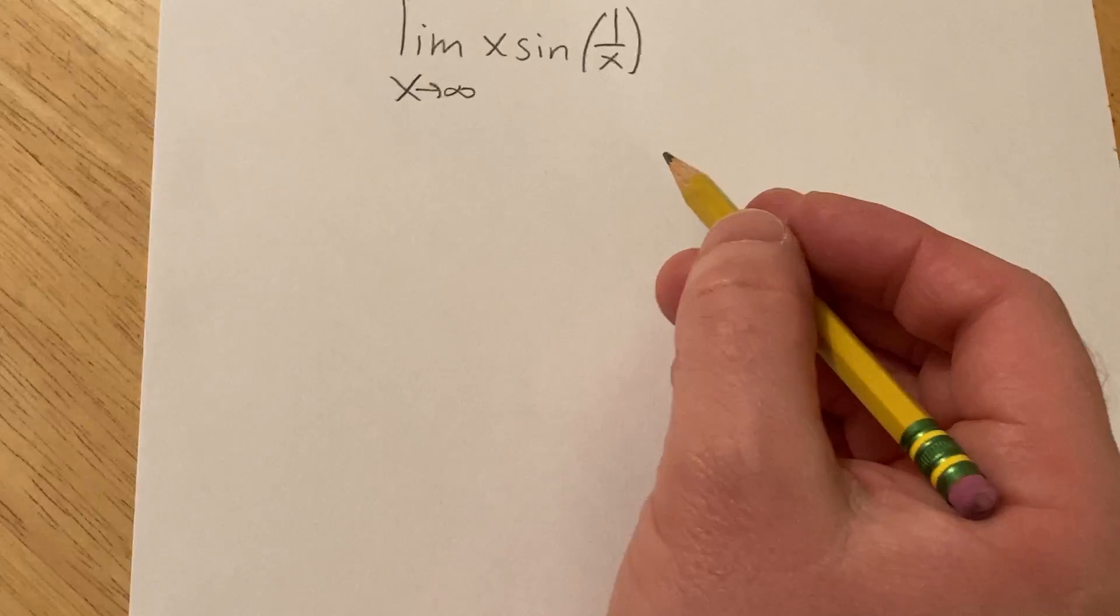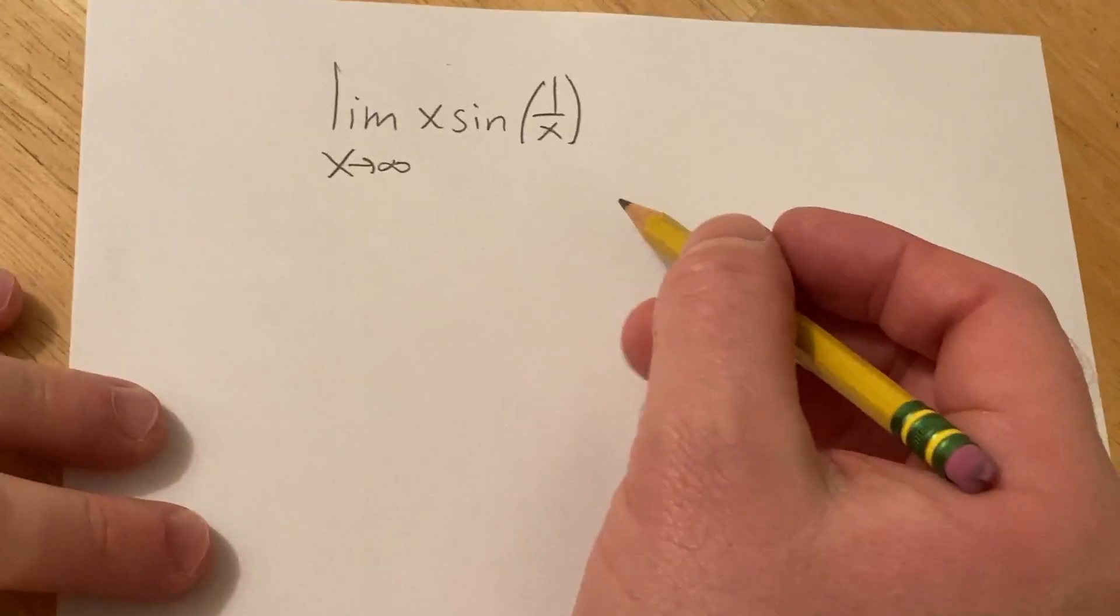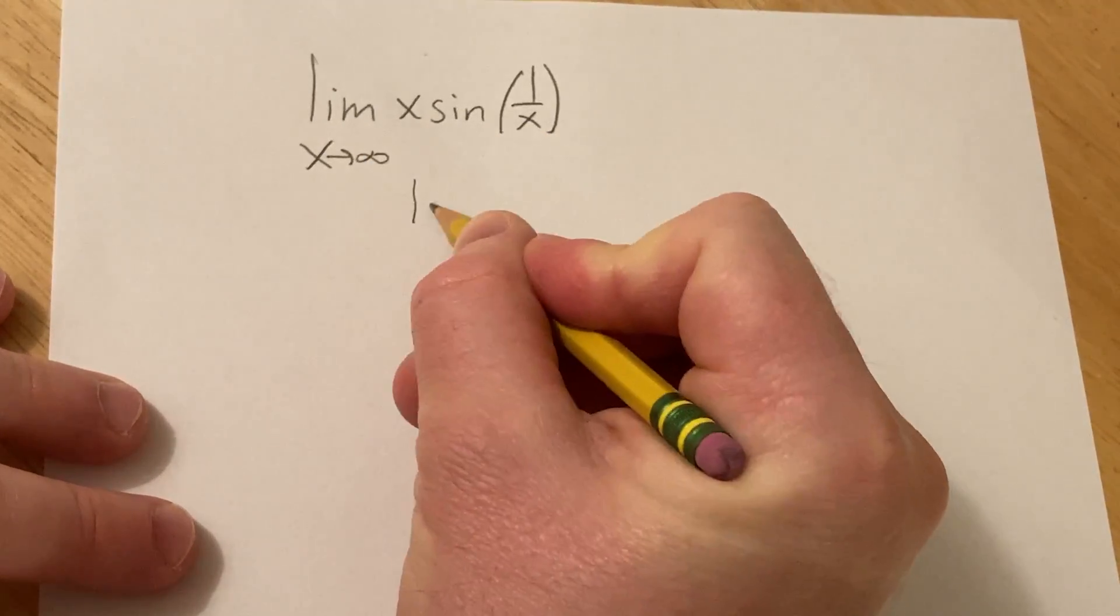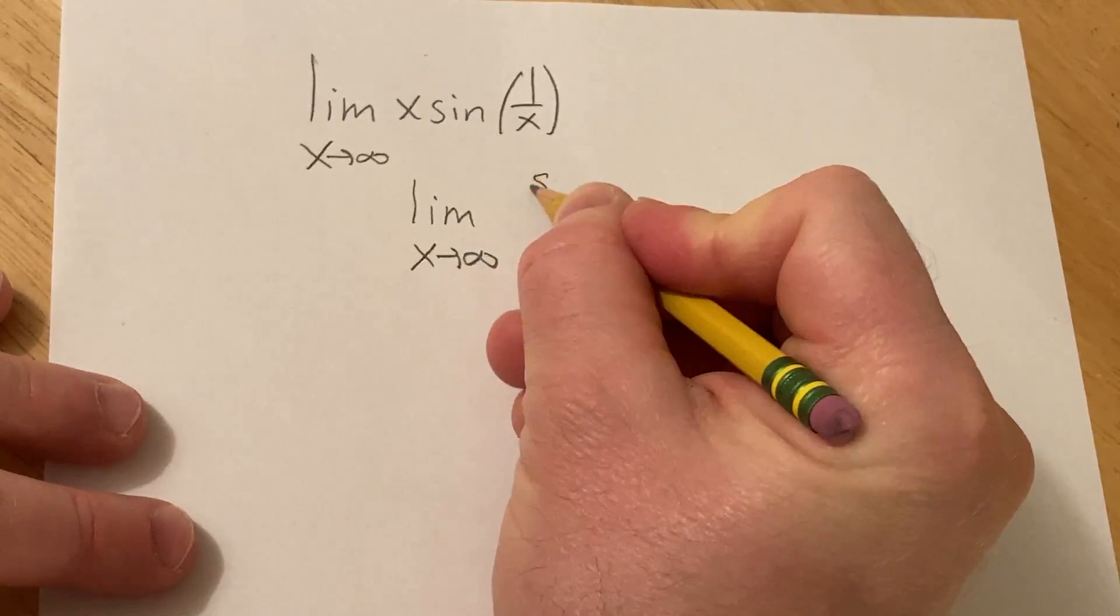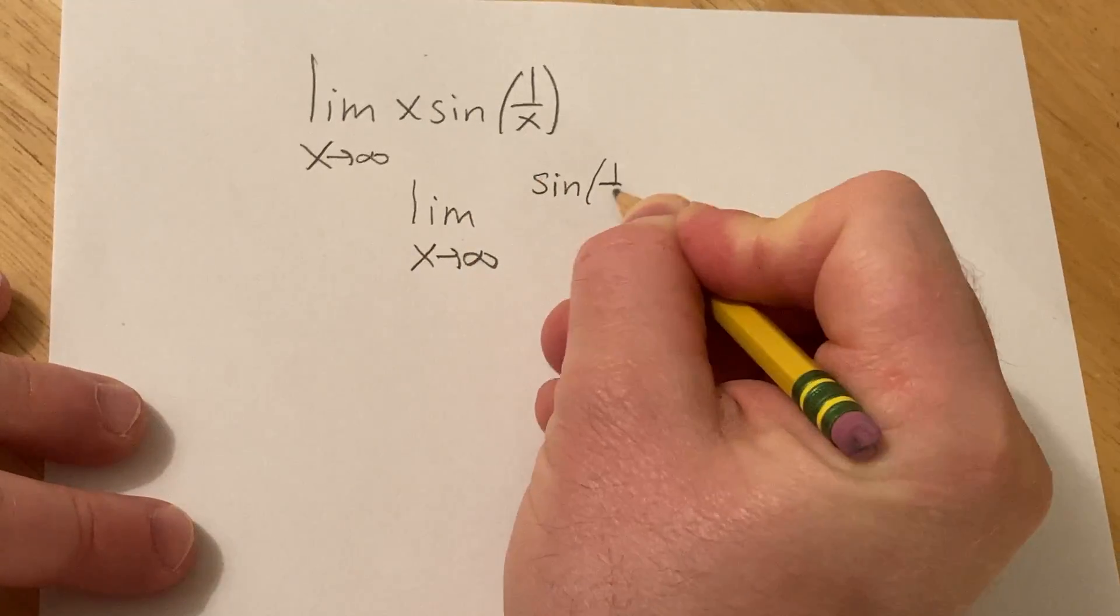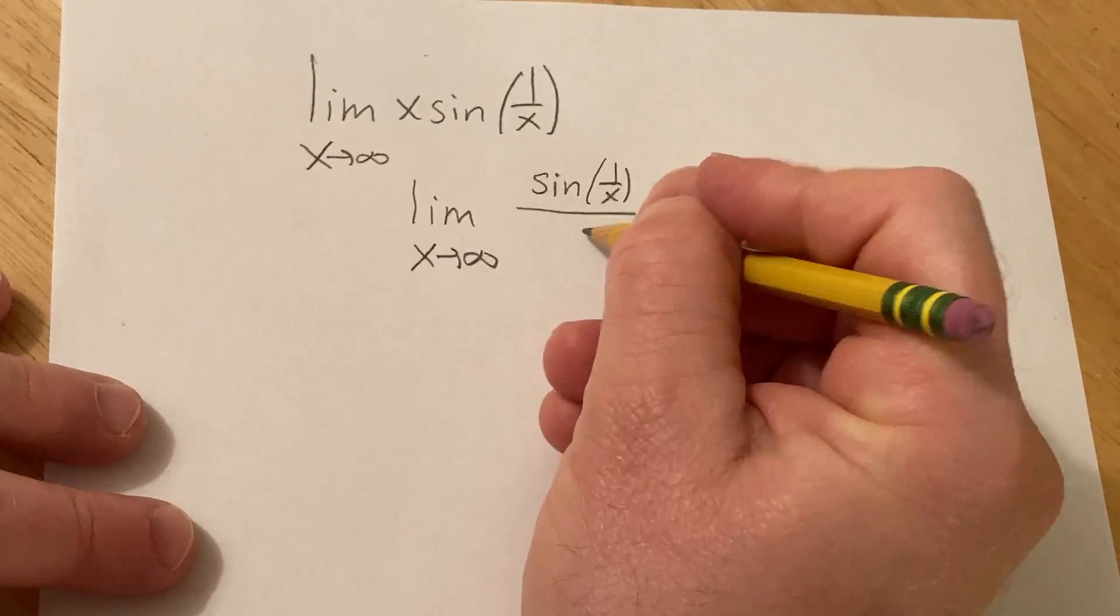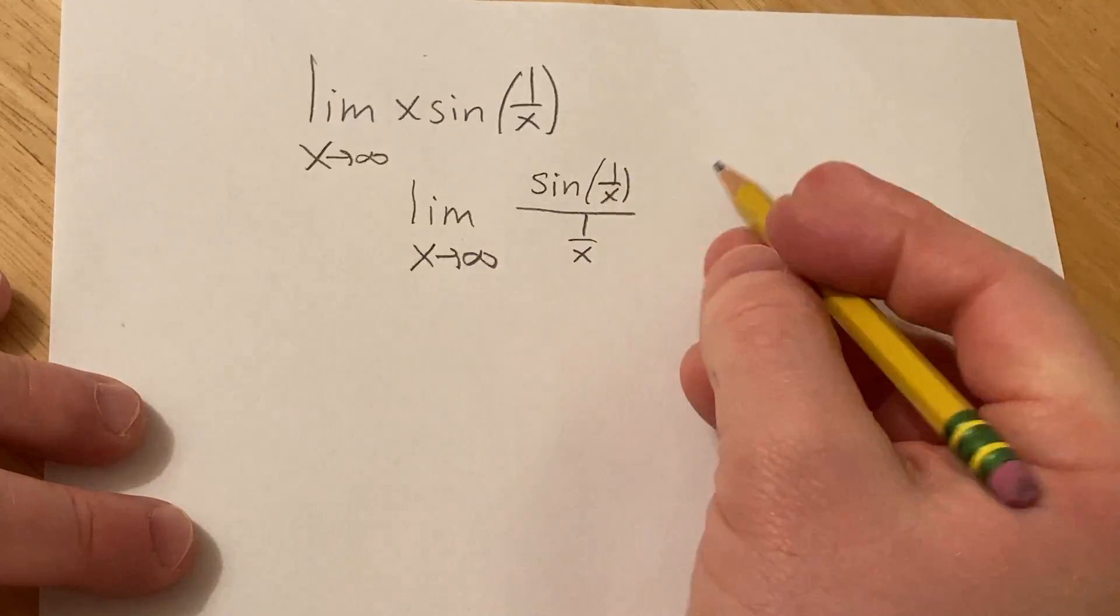So what I'm thinking about doing in this problem, and I haven't done this yet, is basically do the following. So this is the limit as x approaches infinity, and then I'm going to write it like this: sine of 1 over x over 1 over x. I'm going to write it like that.